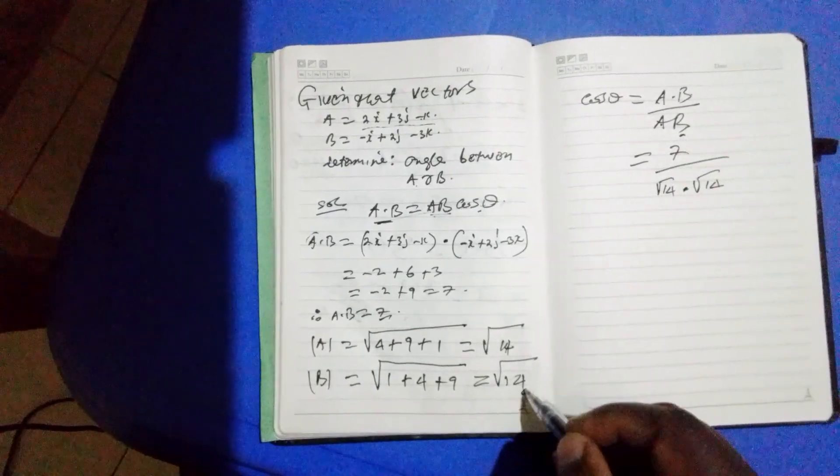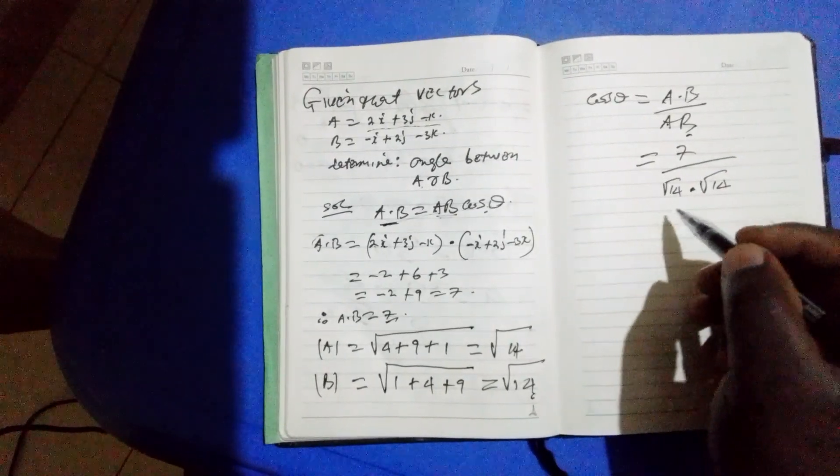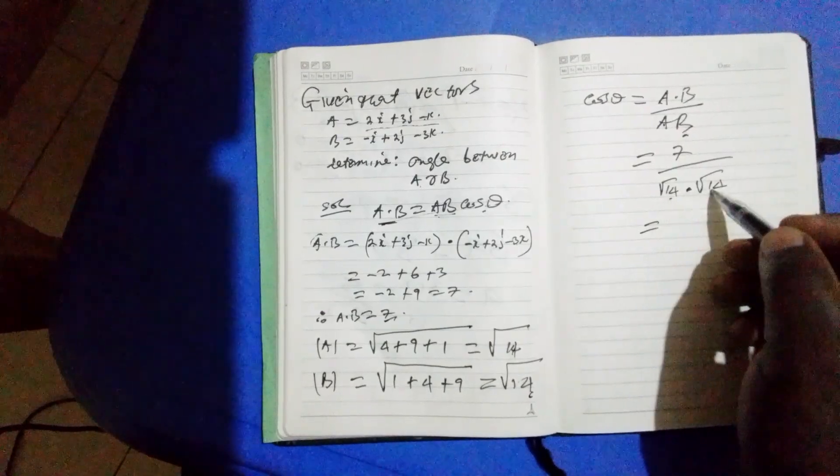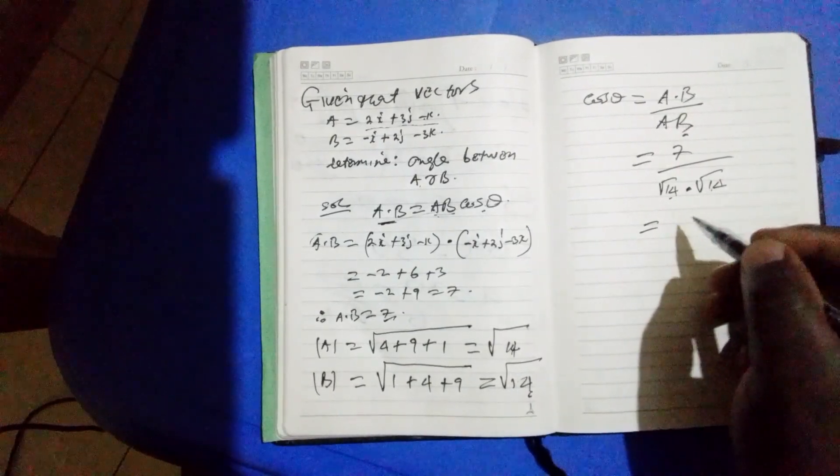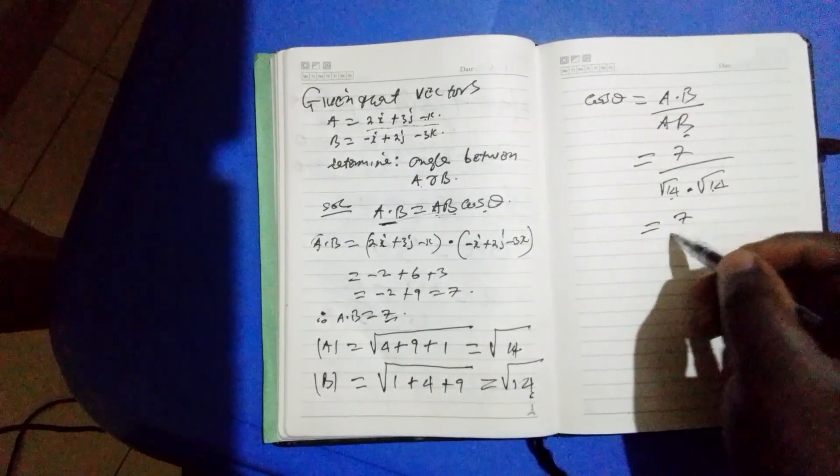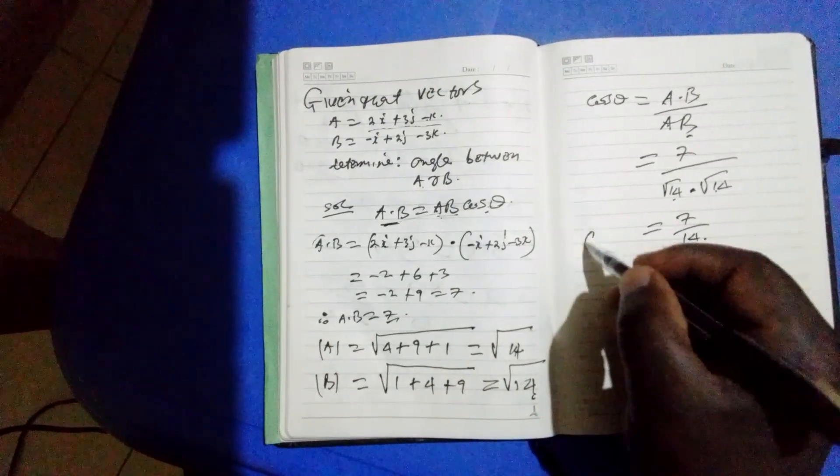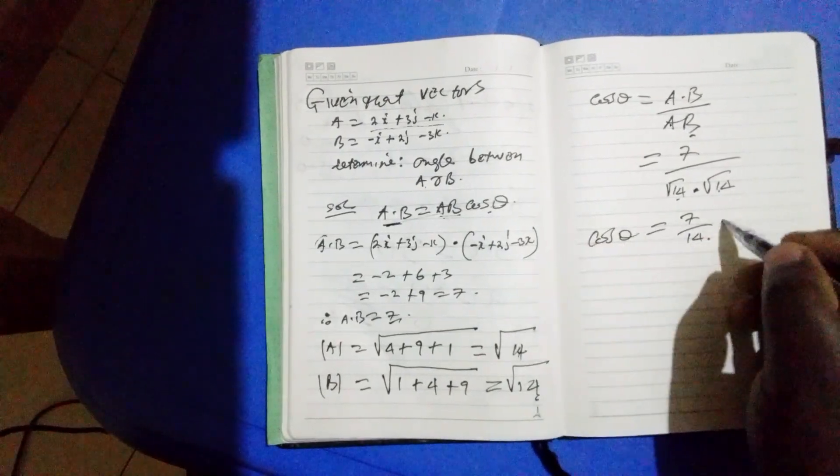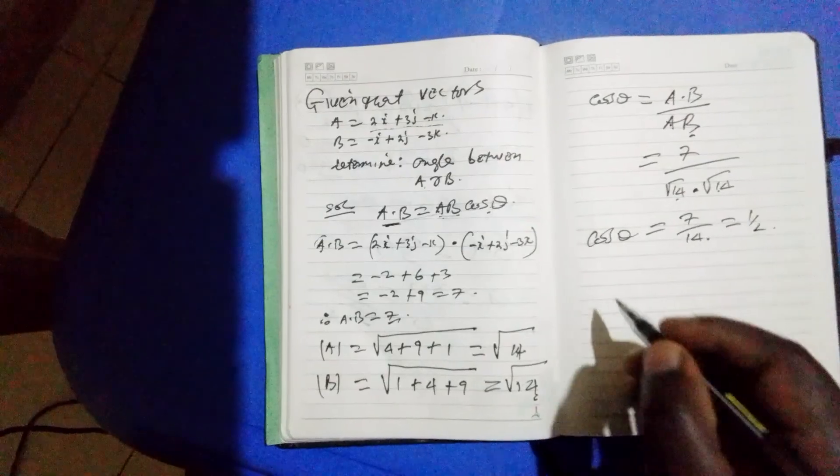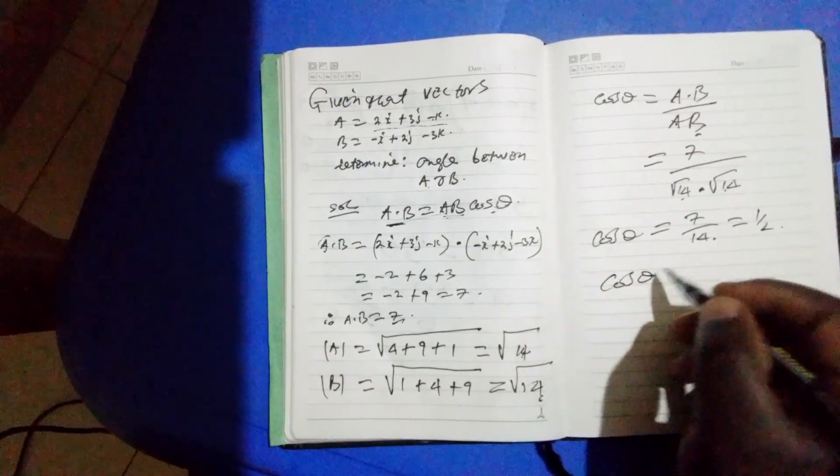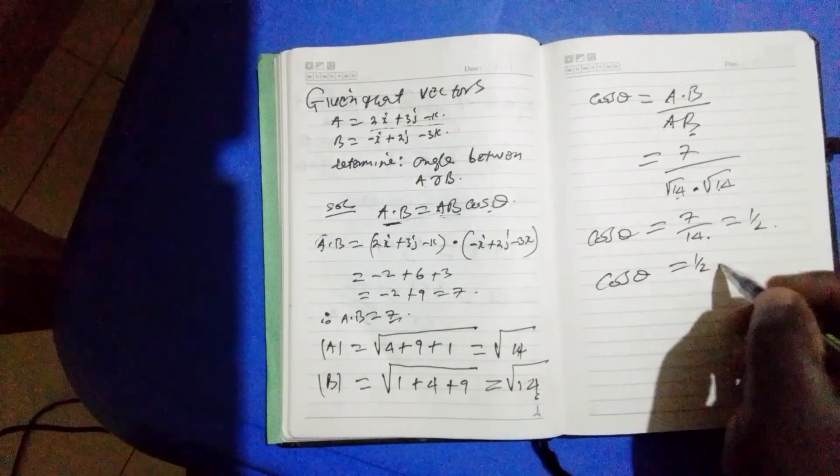Root 14 times root 14 gives you 14, so this equals to 7 over 14, which equals to a half. So cos theta equals a half.